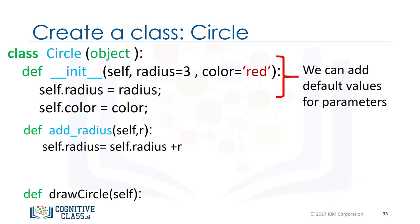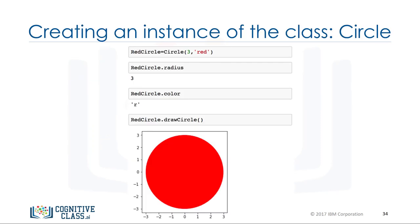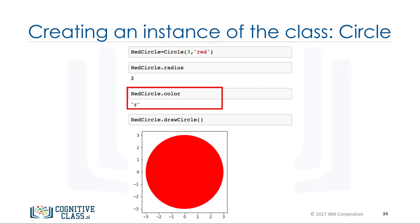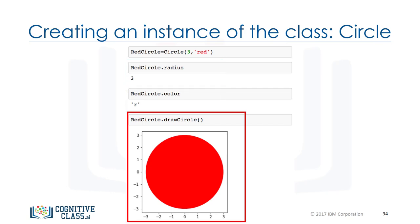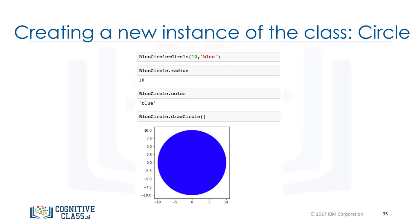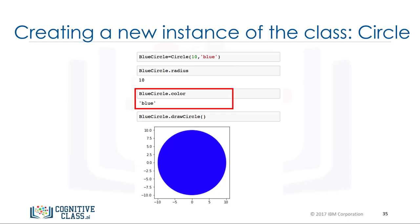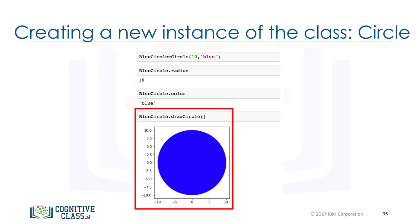We can add default values to the parameters of a class's constructor. In the labs we also create a method called draw_circle — see the lab for the implementation. We can create a new object of type circle with color red and radius 3, access the data attribute radius, access the attribute color, and use the method draw_circle to draw the circle. Similarly we can create another circle object, access its radius and color attributes, and use draw_circle.